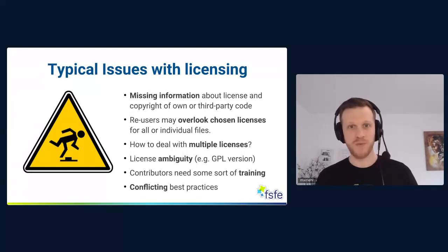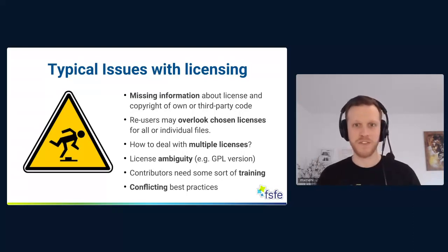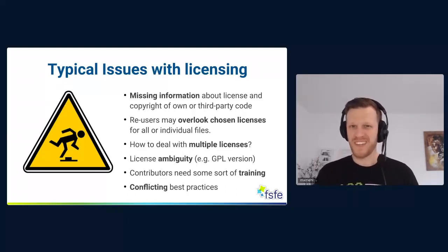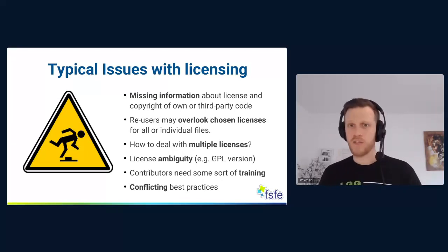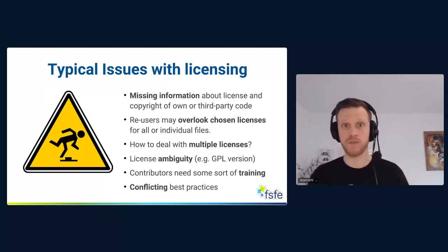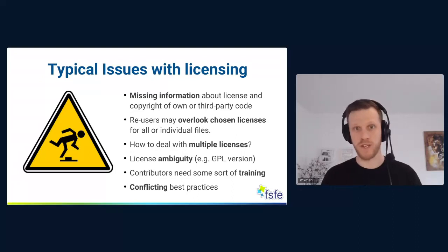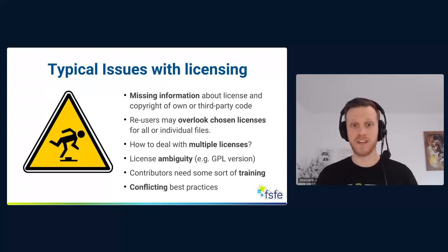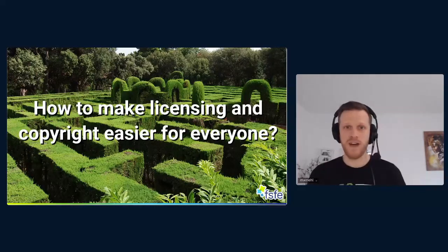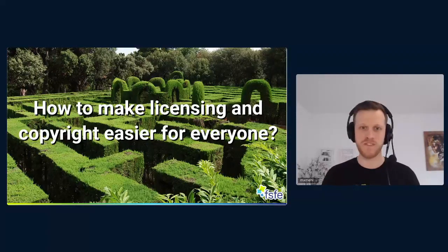Then we have license ambiguity. We are all aware of the GPL license, but there's not only one GPL license. There are many different variants, versions, expressions, and exceptions. So there's a lot of ambiguity. And with a bigger project or community, you also want contributors to be aware of how you do licensing — what's the license and how you declare it to re-users. You need to give them some sort of training. These issues have been around for ages, and in the meantime many different best practices have been developed that are sometimes even conflicting.